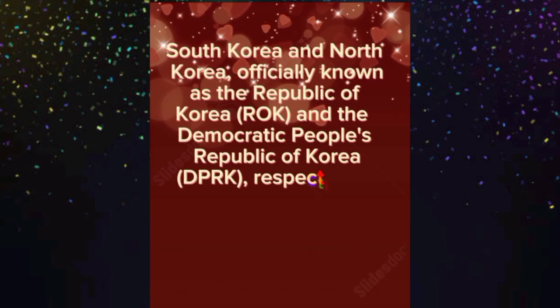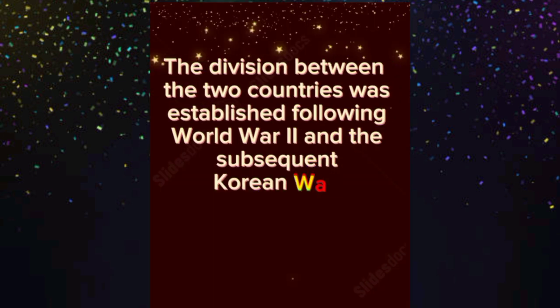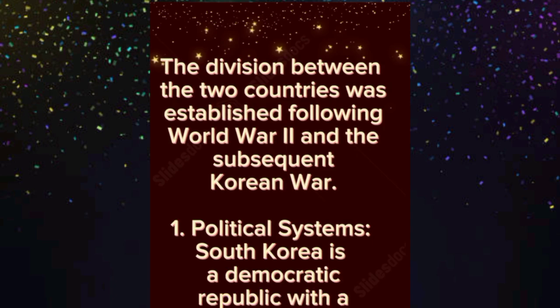South Korea and North Korea, officially known as the Republic of Korea and the Democratic People's Republic of Korea (DPRK) respectively, are two separate countries on the Korean peninsula in East Asia. The division between the two countries was established following World War II and the subsequent Korean War.